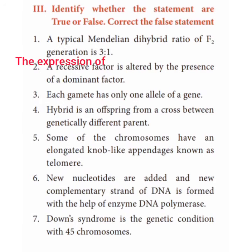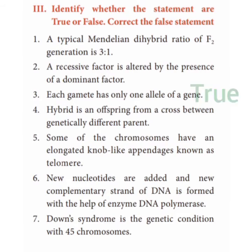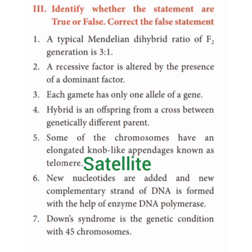The expression of a recessive factor is not altered by the presence of a dominant factor. Third, each gamete has only one allele of a gene — True. Fourth, a hybrid is an offspring from a cross between genetically different parents — True. Fifth, some chromosomes have elongated knob-like appendages known as satellites — False, not telomere.